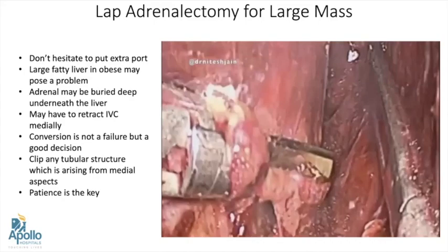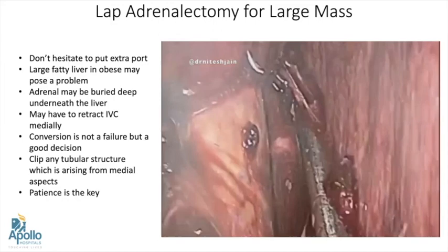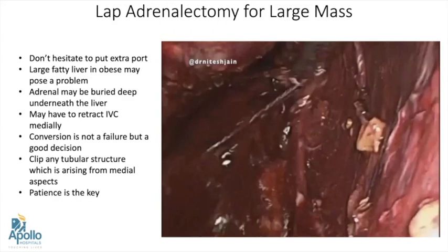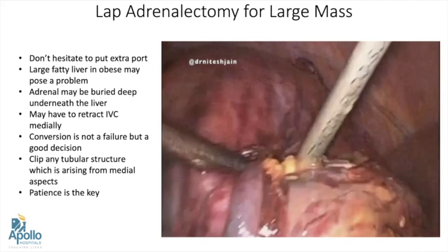Because in the era of open surgery, most of these cases were tackled by a thoraco-abdominal incision, which is a very morbid incision. Such a large mass — as in this case around a 17 centimeter tumor — can be easily removed by a small pfannenstiel incision and the patient's recovery is very, very fast.